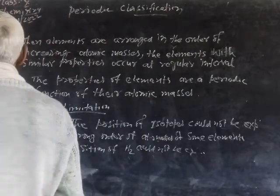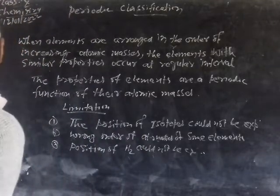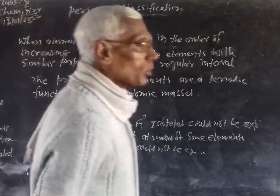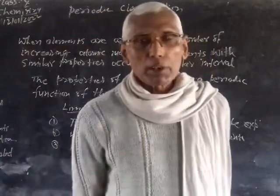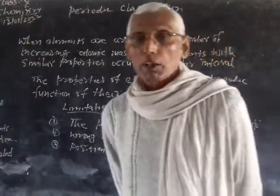In the Mendeleev Periodic Table, there are seven periods and eight groups in Mendeleev's Periodic Table.